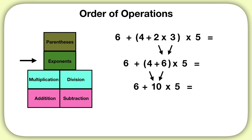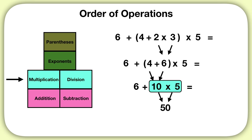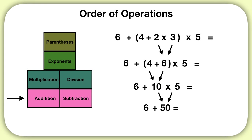There are no exponents, so we look for multiplication or division. Next we multiply ten times five, which is fifty. With no more multiplication or division, we move on to addition or subtraction. Our last step is to add six plus fifty to get a final answer of fifty-six.